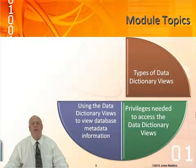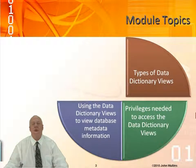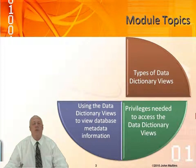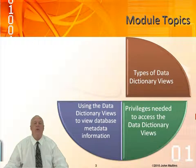These Data Dictionary Views are going to give us information about our database and objects in our database — things like information about tables and columns, constraints, indexes. Think about any object type that you store in the database: stored procedures, functions, packages, triggers — all that information we can access through these Data Dictionary Views.